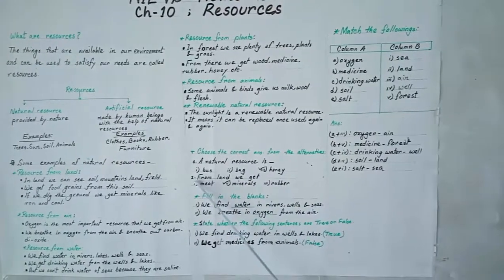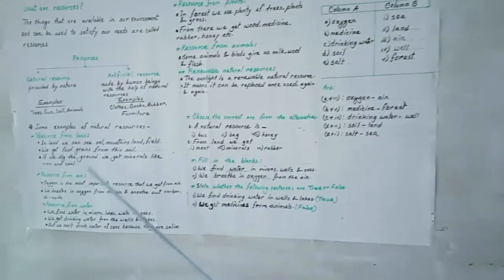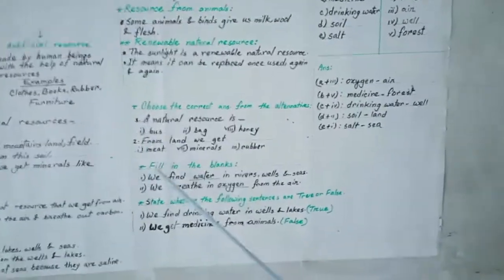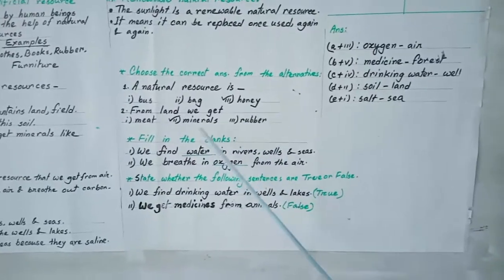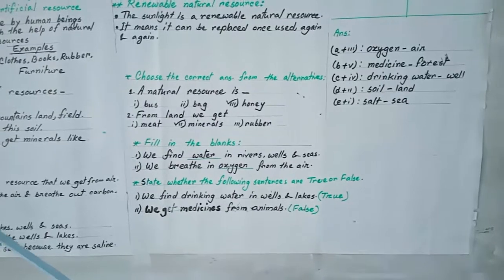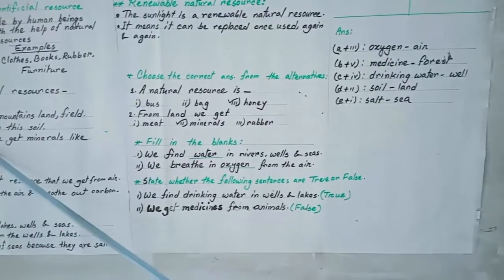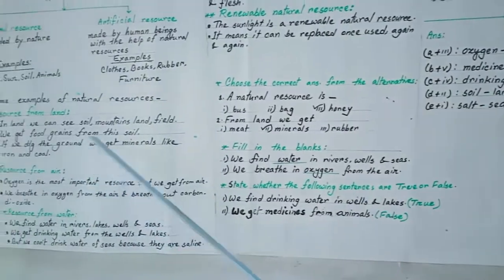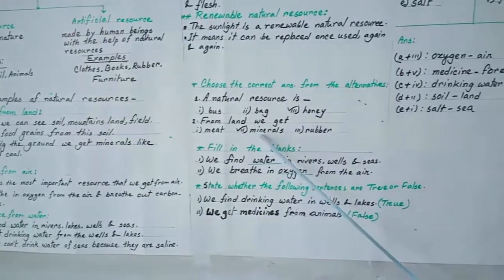Second: from land we get — meat, minerals, or rivers? Which thing can we get from the land? If we dig the ground, that means if we dig the land, we get minerals. So the correct answer is minerals.